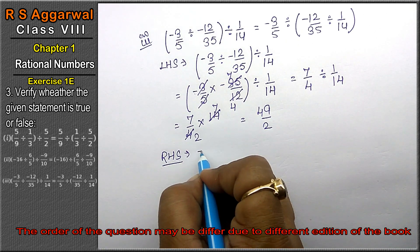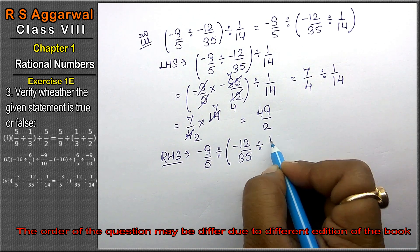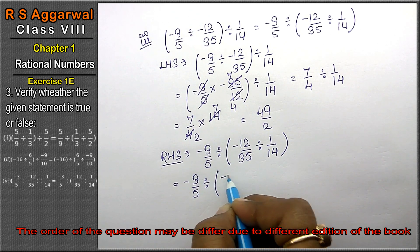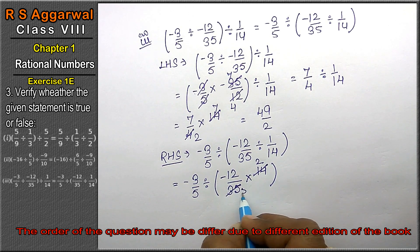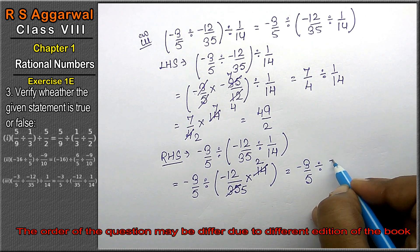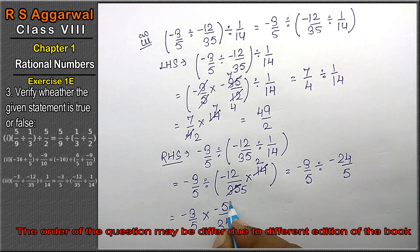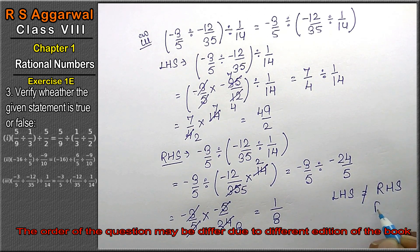Right-hand side: -3/5 ÷ -12/35 ÷ 1/14. This becomes 1/5 ÷ -24/5, then divided by 1/5 multiplied by -5/24. The 5s cancel, and simplifying gives 1/8. That means left-hand side (49/2) is not equal to right-hand side (1/8); hence, the statement is false.